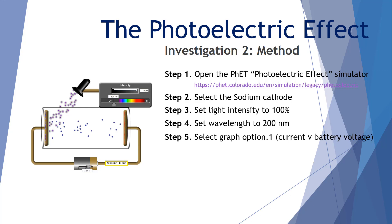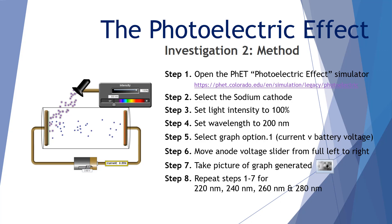Step five, select graph option one, that is the current versus battery voltage graph. Step six, move anode voltage slider from full left to right. Step seven, take a picture of the graph generated using the picture tool. And step eight, repeat steps one to seven for wavelengths of 220, 240, 260, and 280 nanometers.